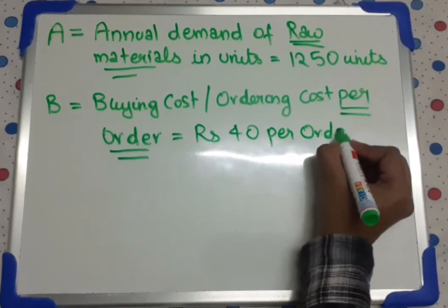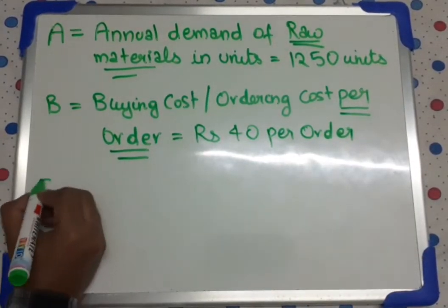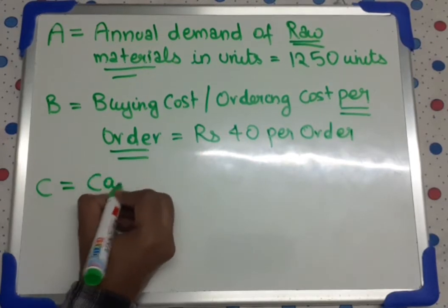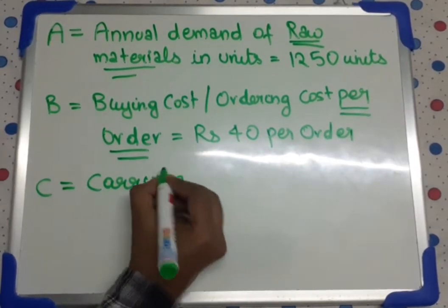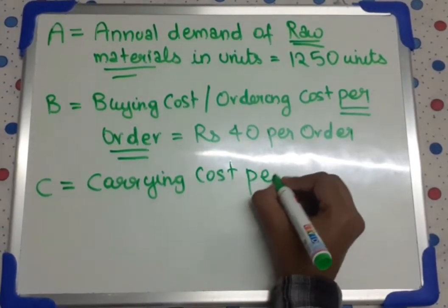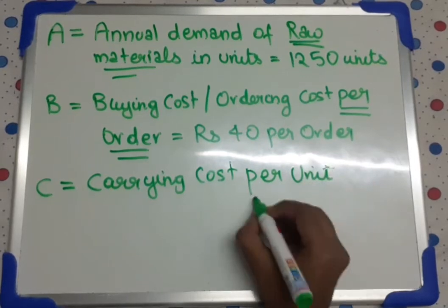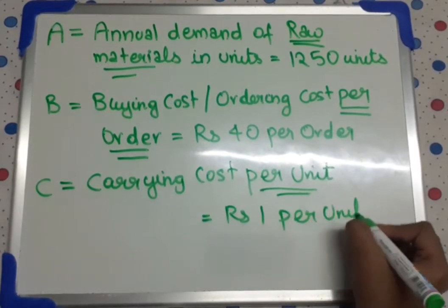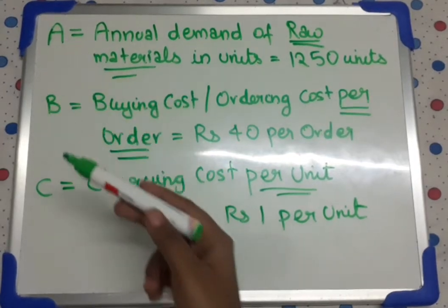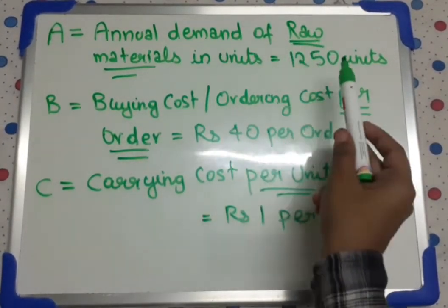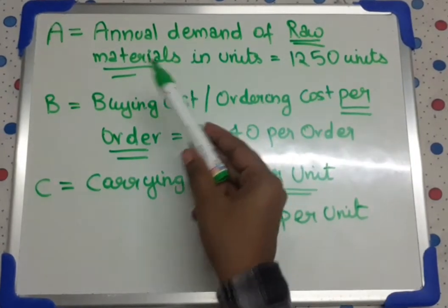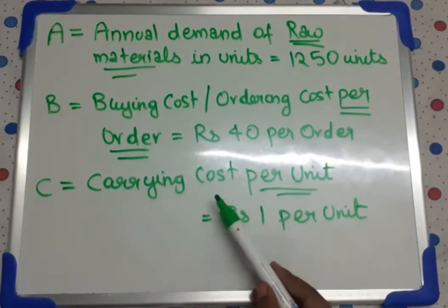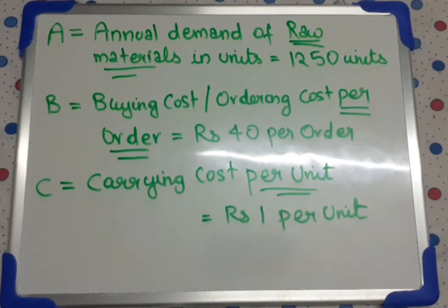The next information given is inventory carrying cost. Inventory carrying cost C is rupees 1 per unit. It is carrying cost per unit, and the information given here is rupees 1 per unit. So it is always important to remember the full form of each letter: A means annual demand of raw materials, B means buying cost or ordering cost per order, and C means carrying cost per unit.